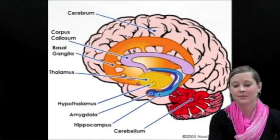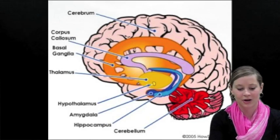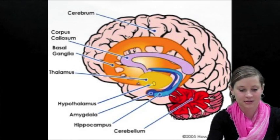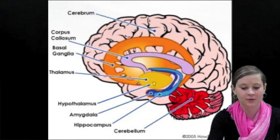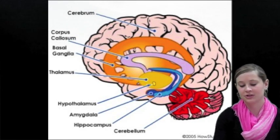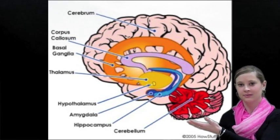And to learn about the interior brain, such as the amygdala, cerebrum, corpus callosum, thalamus, hypothalamus, and hippocampus, pick on the images right here.